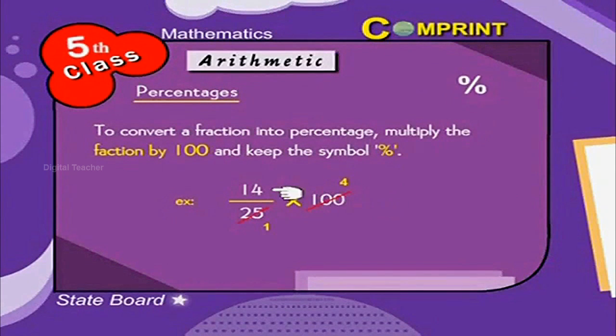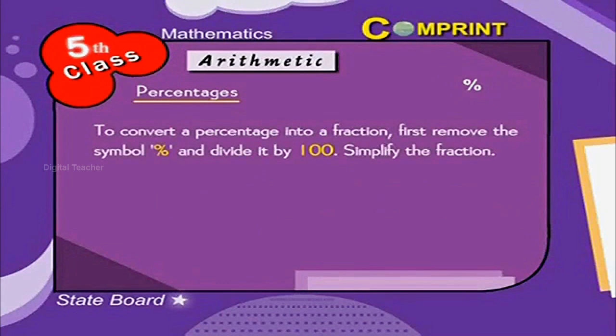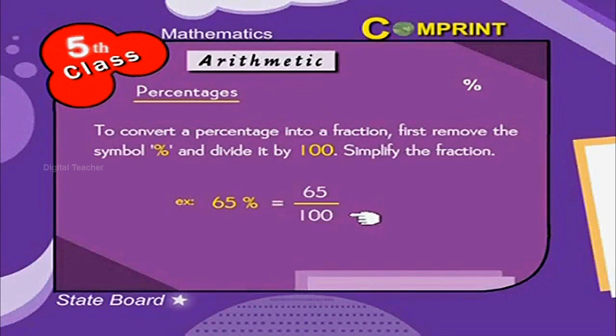To convert a percentage into a fraction, first remove the symbol of percentage and divide it by 100 and simplify the fraction. For example, 65% can be written as 65 by 100. 5 13s are 65, 5 20s are 100. So, 13 by 20.